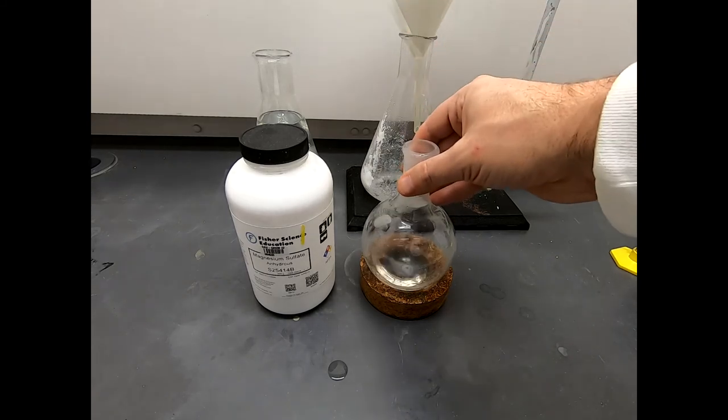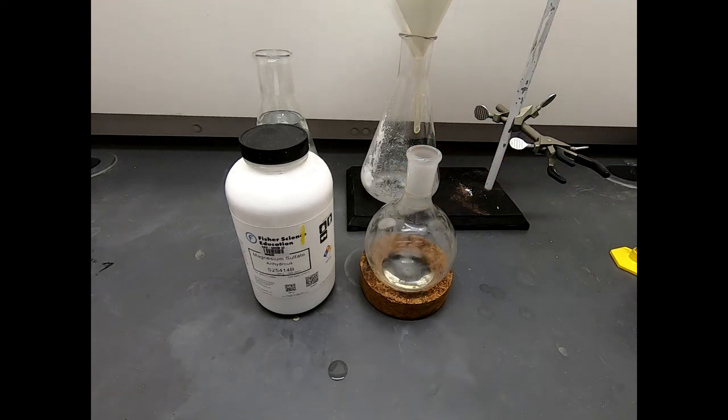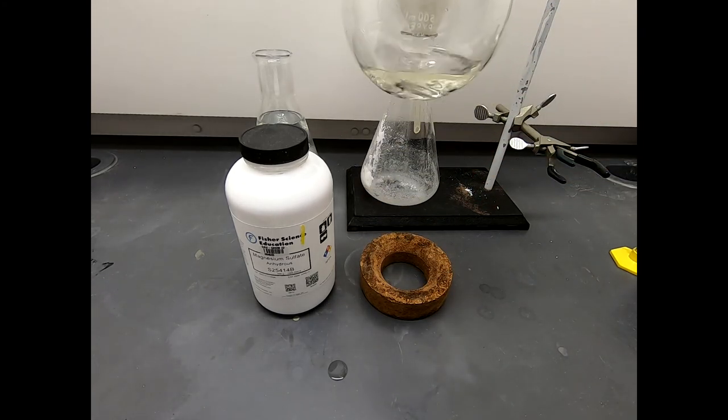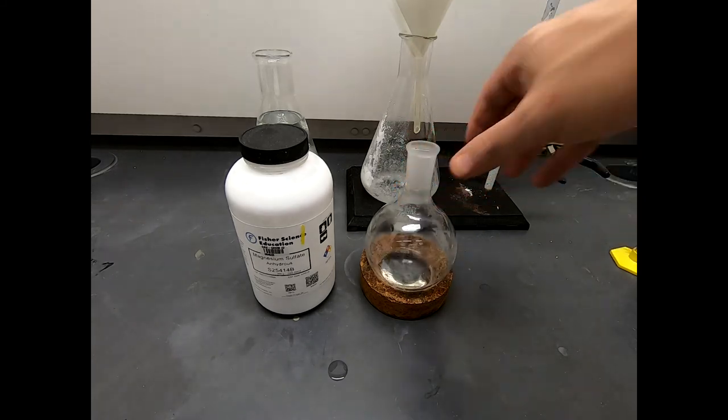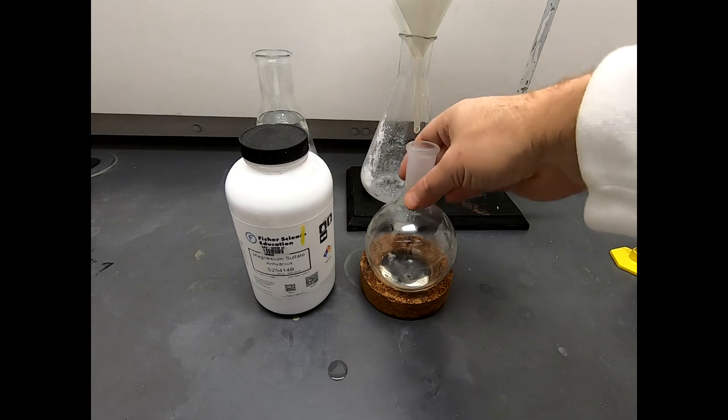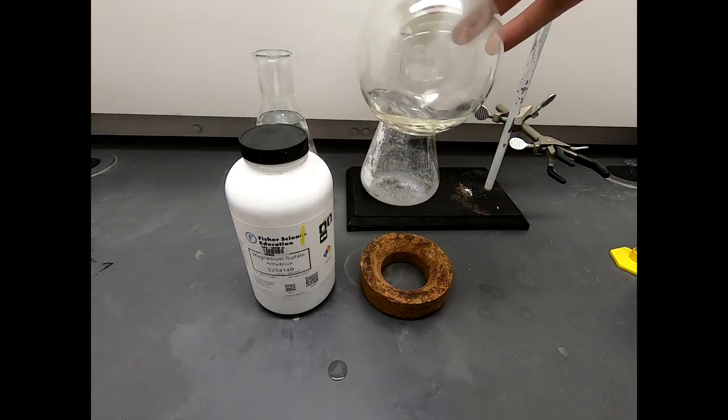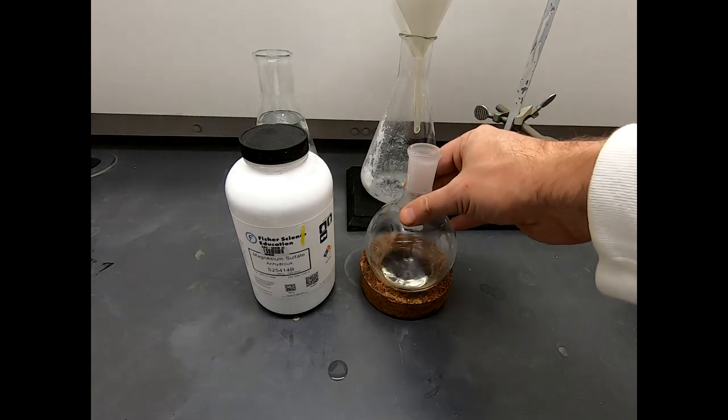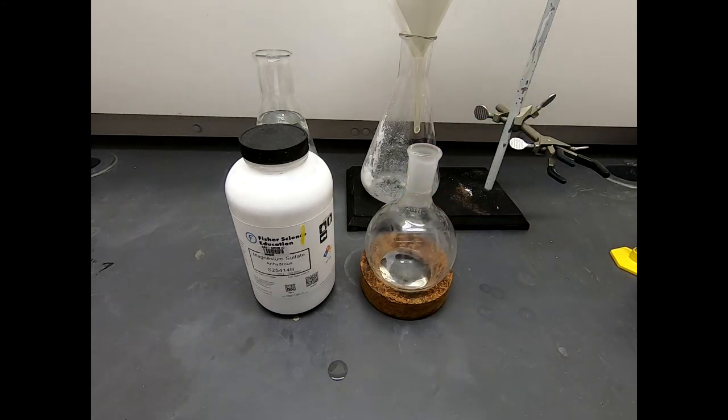And an NMR will tell us everything we need. And if we wanted to be more thorough, we could do things like look at it by GC and that sort of thing. But NMR will answer us just fine. My only concern is that we have a lot of ether left in here. I don't think we do, but that is probably my biggest concern. So we'll get an NMR of this material and see what we have.